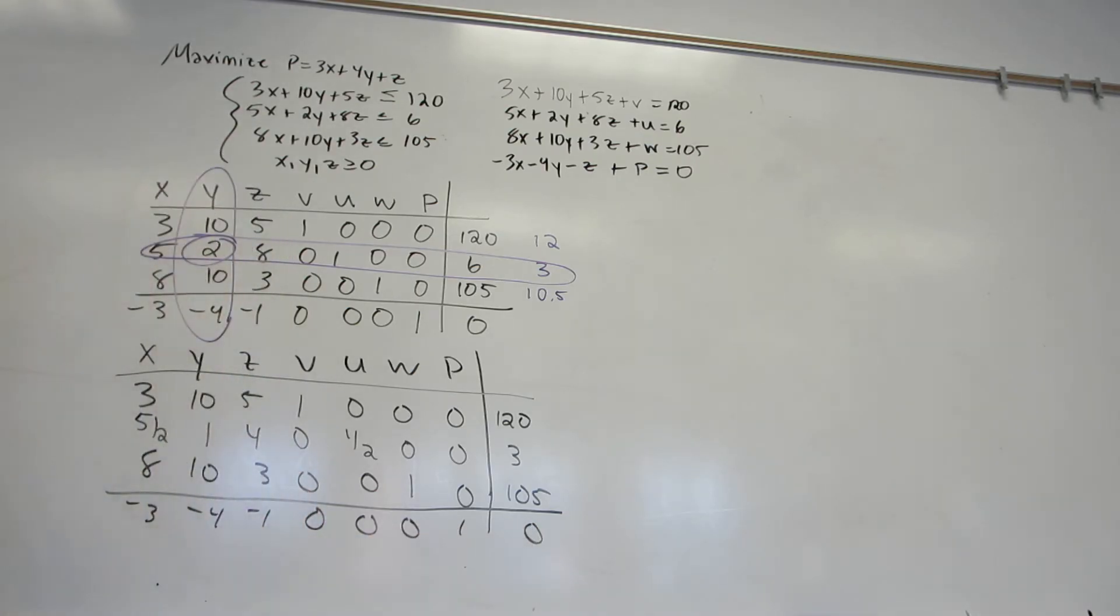This is still my pivot element. I want to get zeros above and below it.